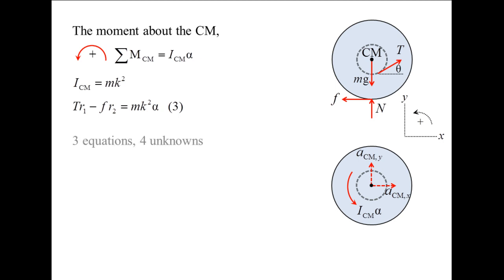We have used the three equations of motion, but have four unknowns: F, n, alpha, and the x-component of the acceleration of the center of mass.